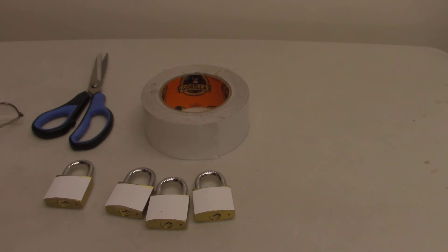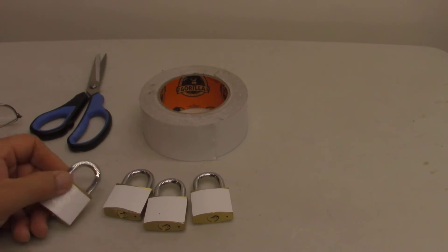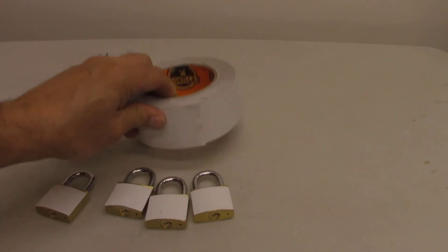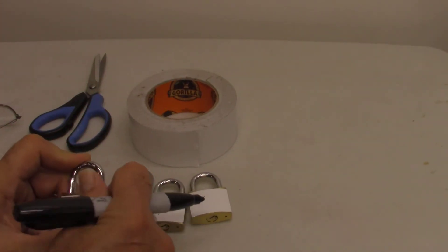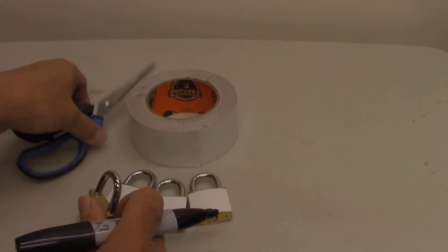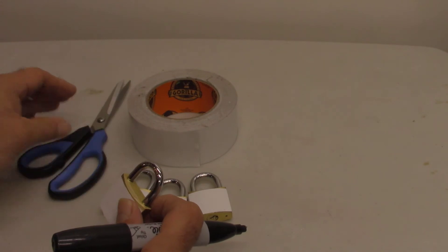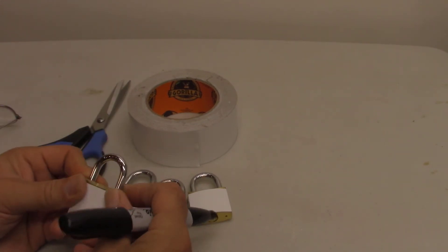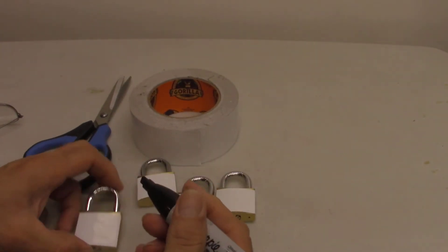So instead of painting the locks, you know, this is just for inside use for the gym. I just use some duct tape. Put a piece on there, cut around the edges with a sharp pair of scissors. And then I'm going to put my initials here.